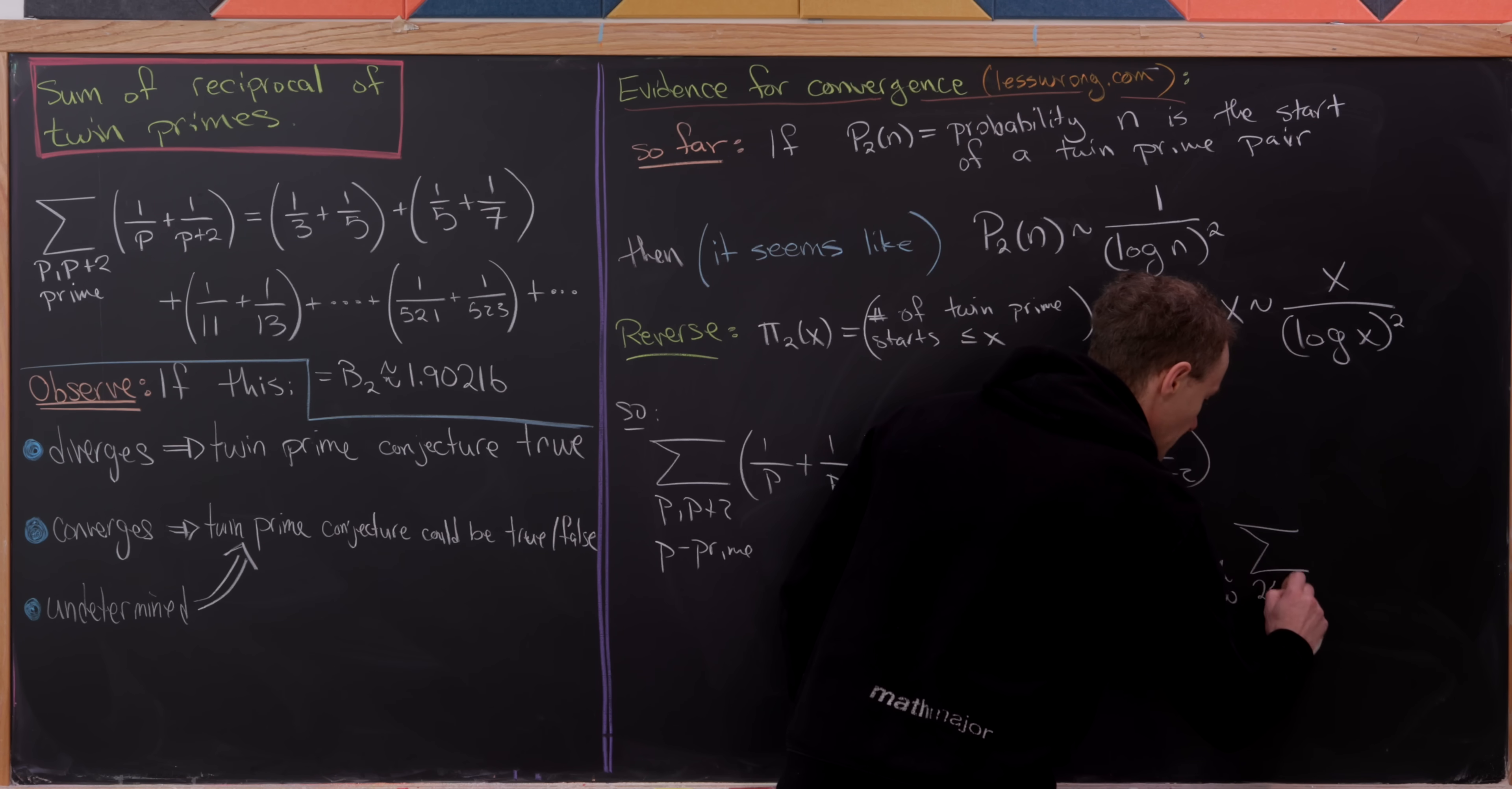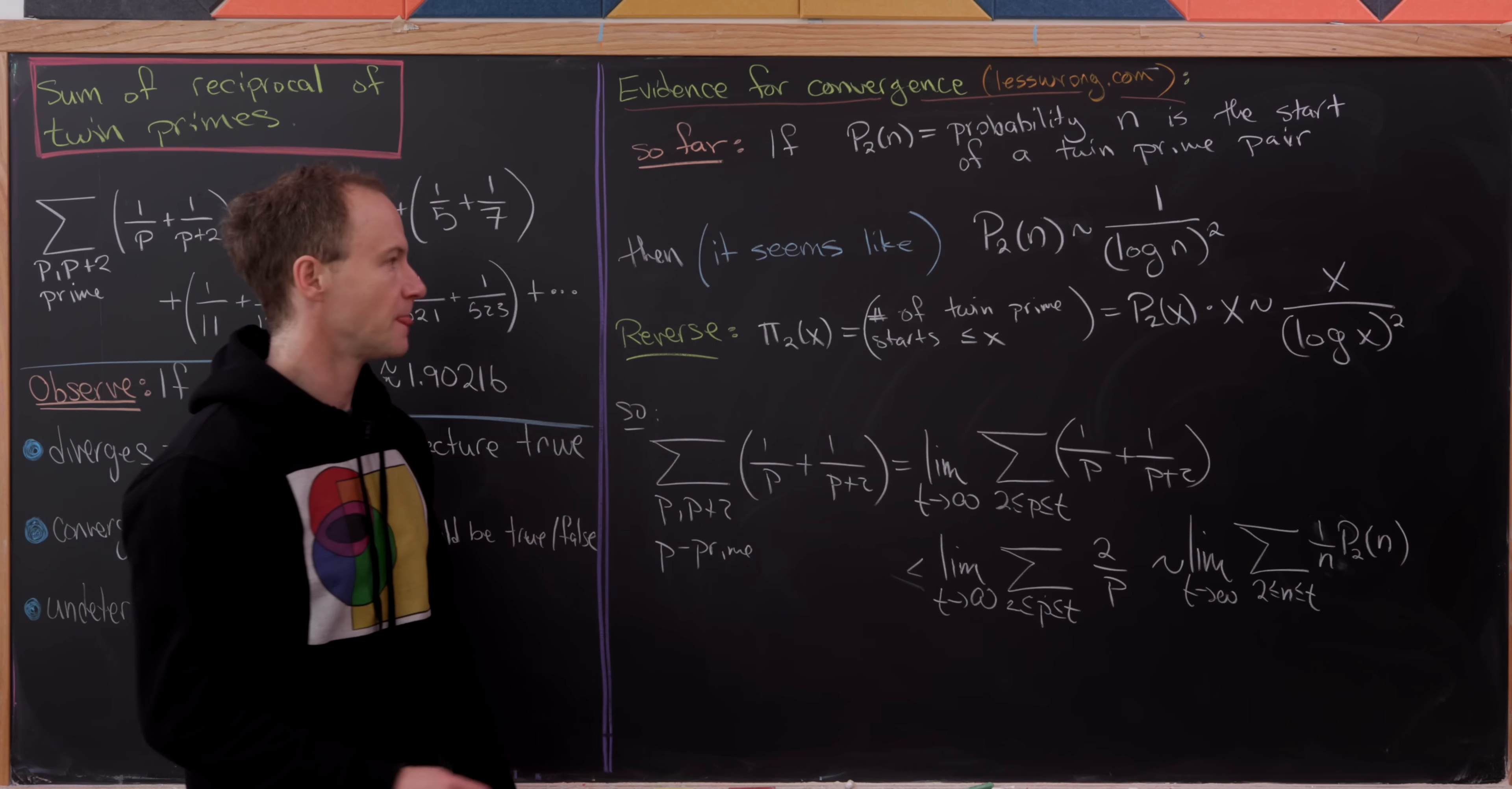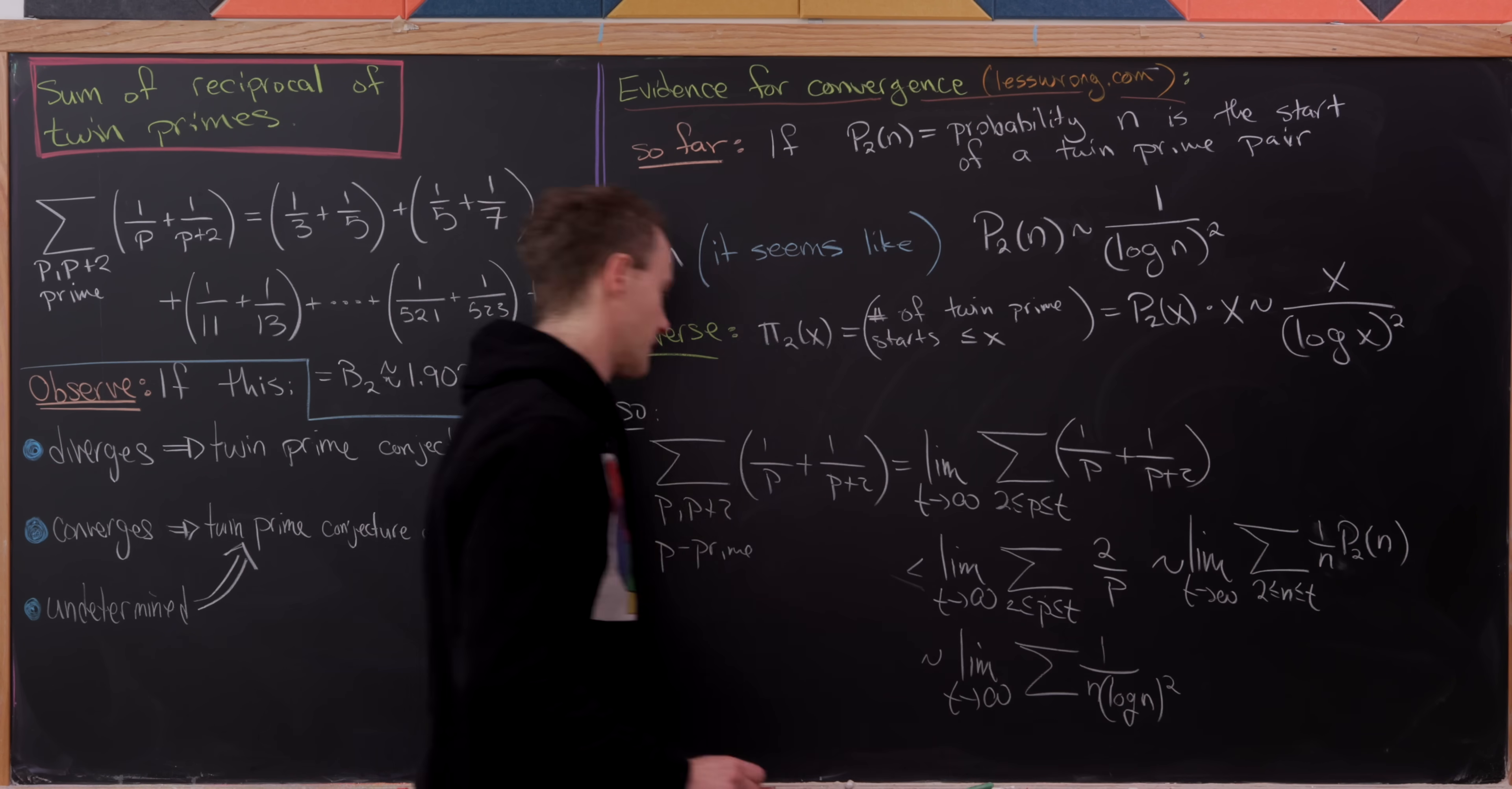But now let's observe that that is like asymptotically similar to the limit as t goes to infinity of the sum over all numbers in between 2 and t of the probability of 1 over n times the probability that n is the beginning of a twin prime, like we had over here. But now let's observe that that grows asymptotic to the limit as t goes to infinity of this same sum of 1 over n times the log of n all squared.